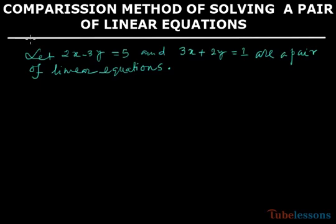Here we are taking two equations: one is 2x minus 3y equals 5 and 3x plus 2y equals 1.